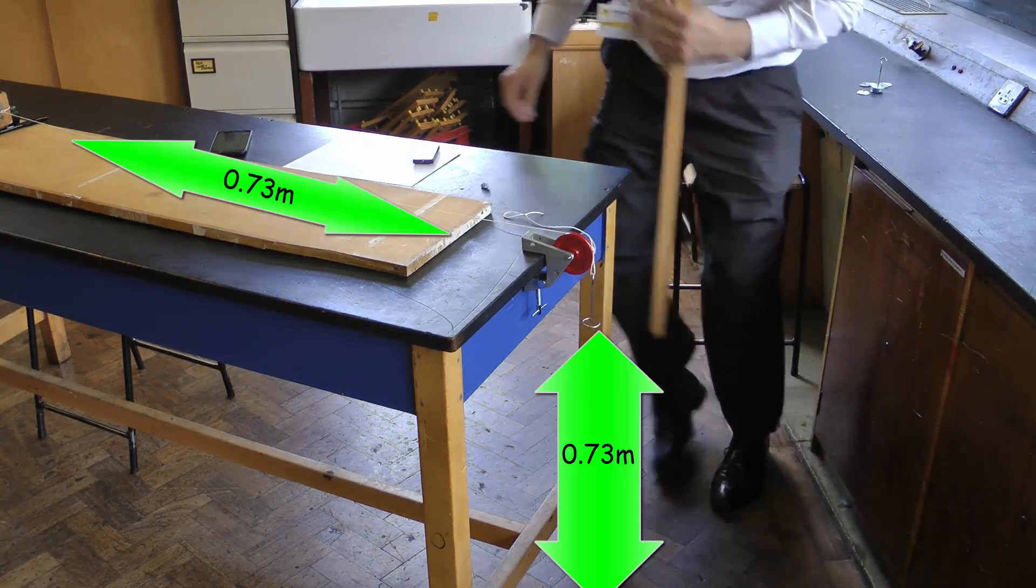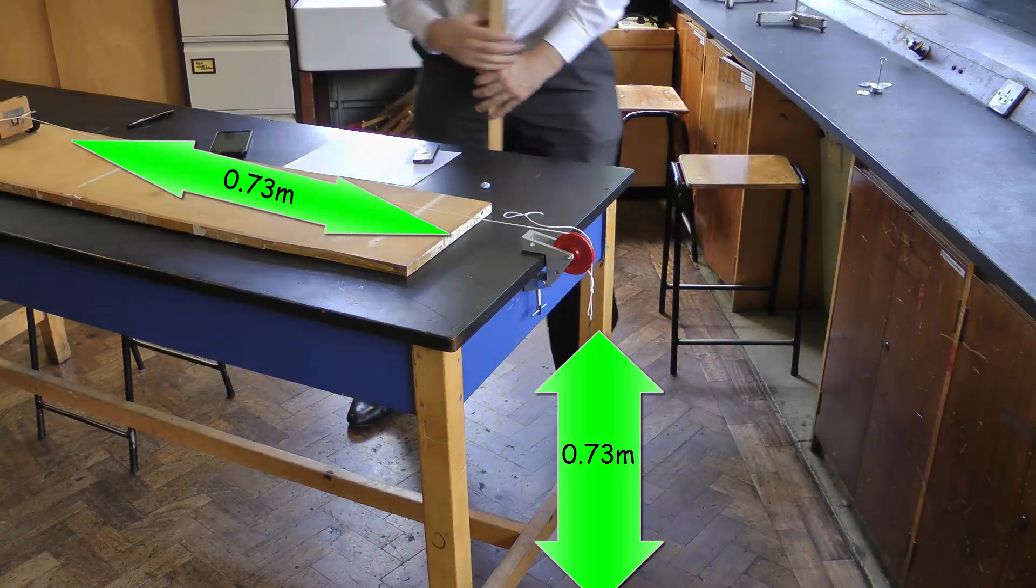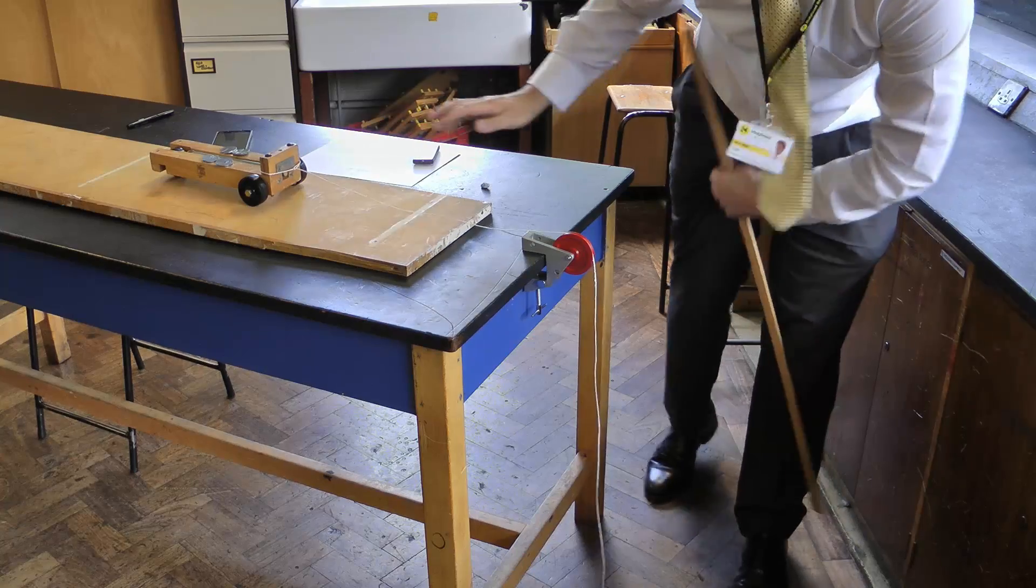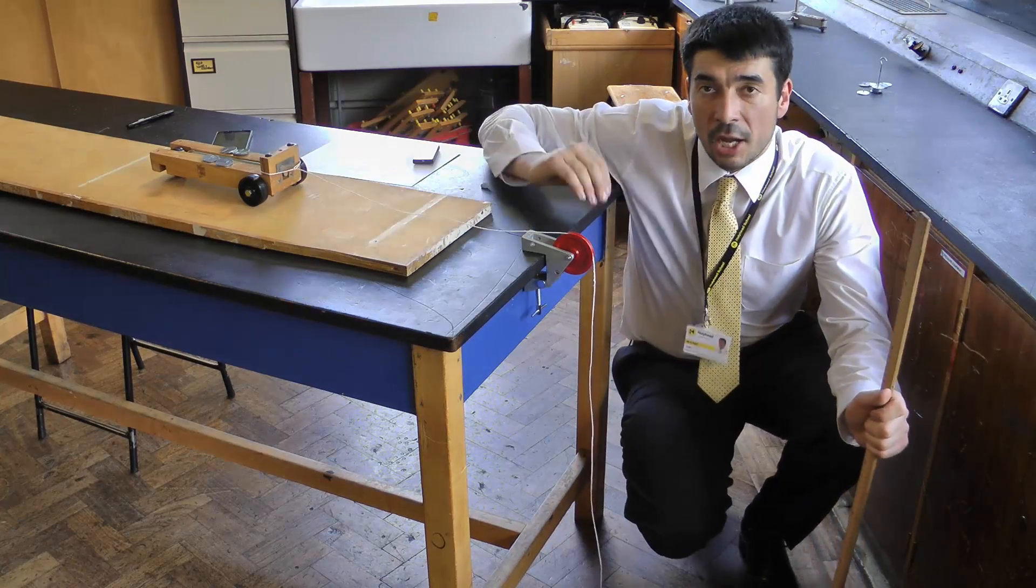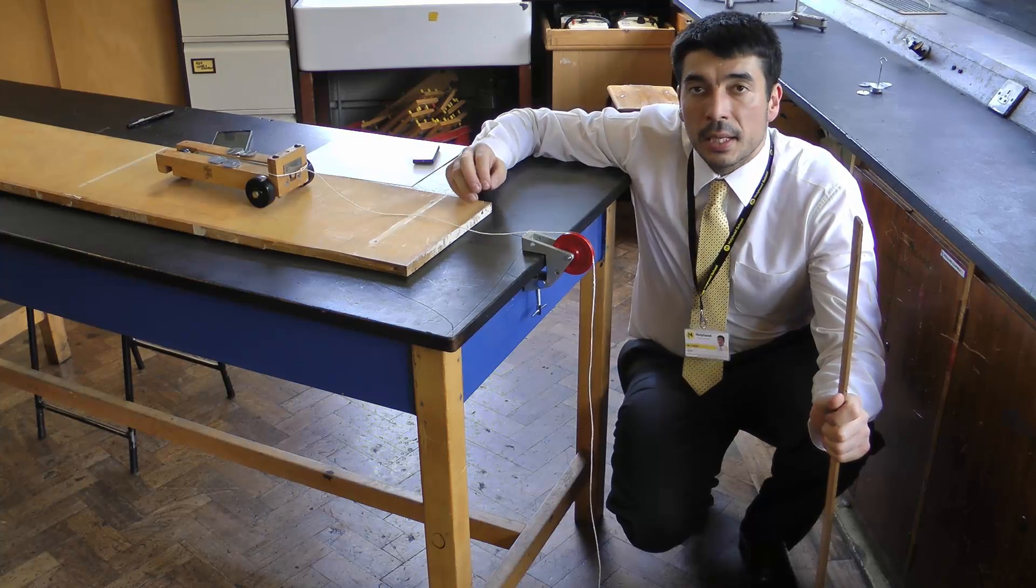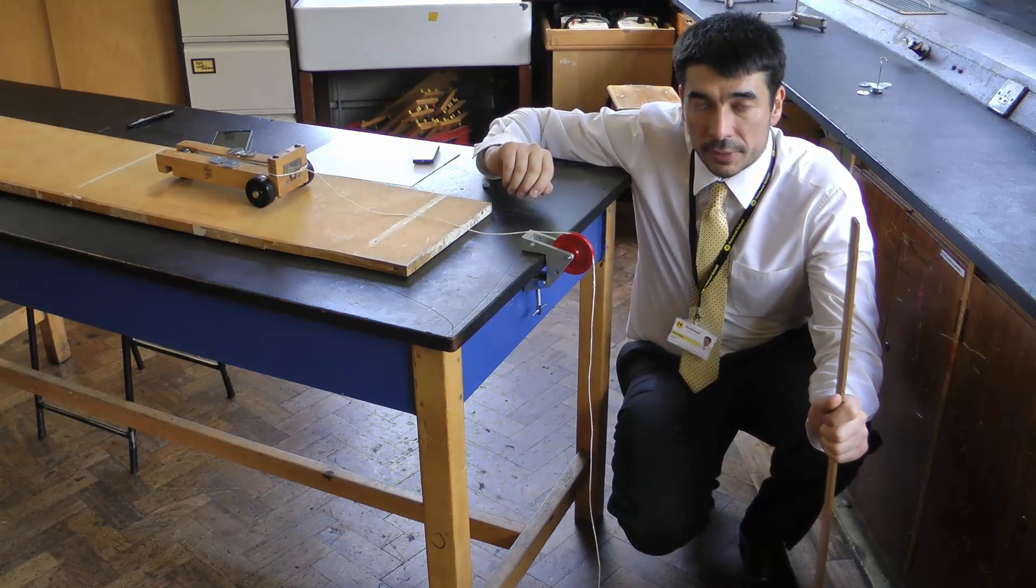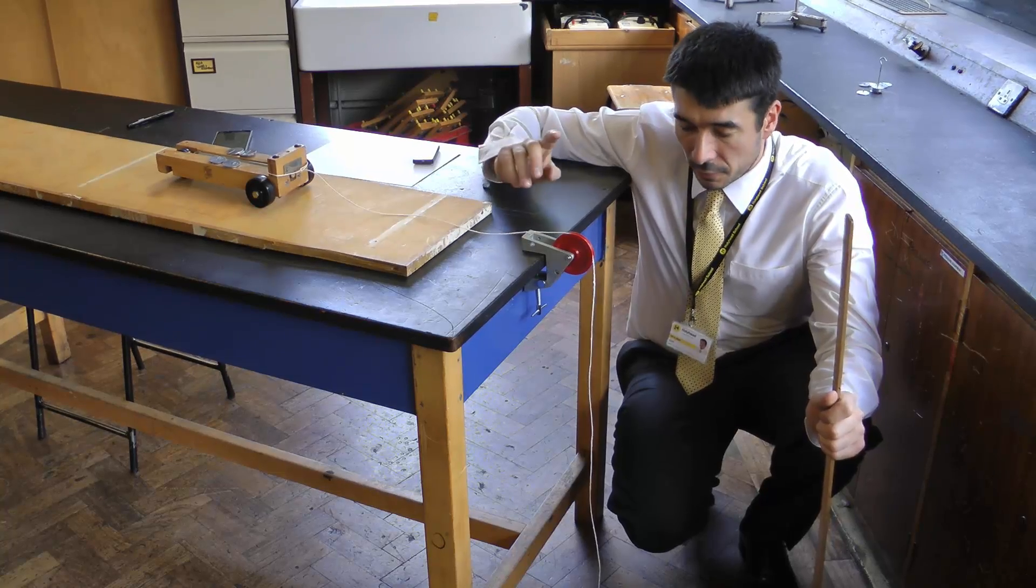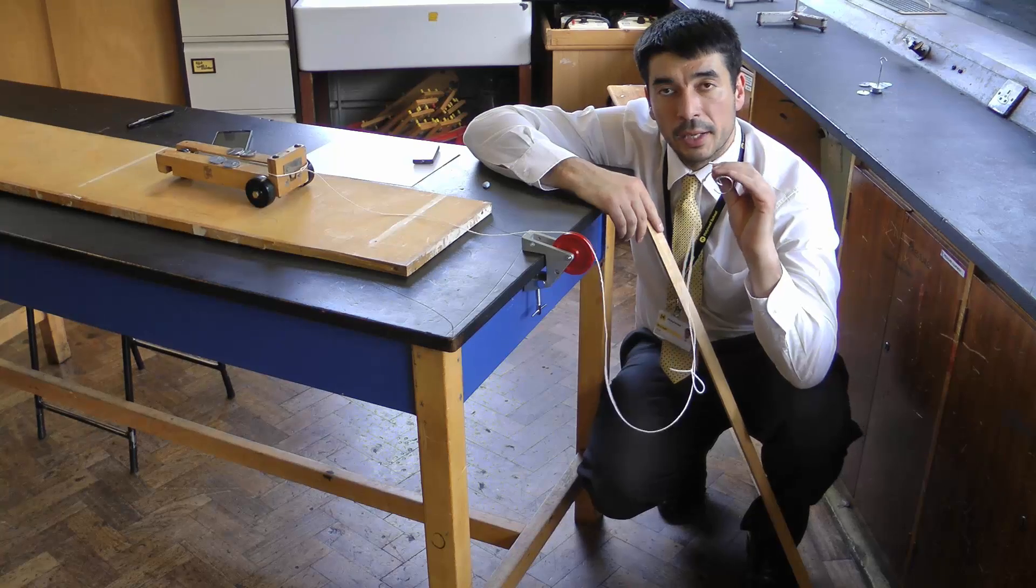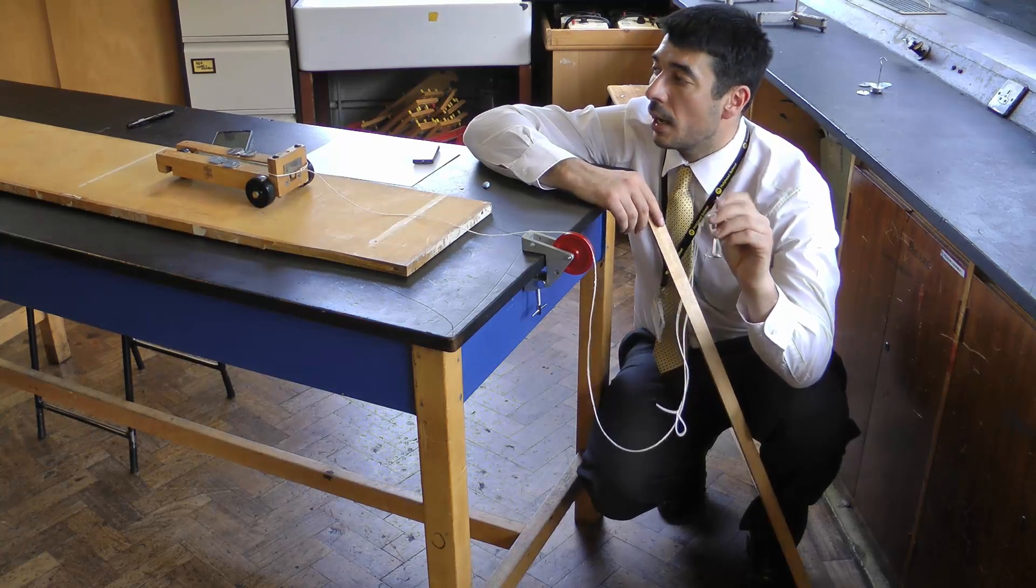So I'll just show you that falling now. Now I would have started the timing as soon as the trolley started moving, got my time reading, and then I would repeat it three times to get an average. So that is for a force that was generated by this ten-gram mass falling that I have to multiply by gravity.